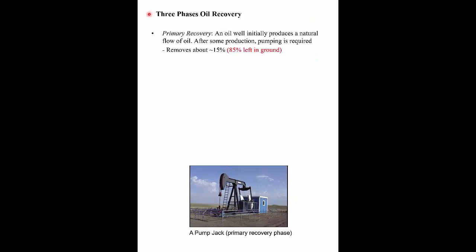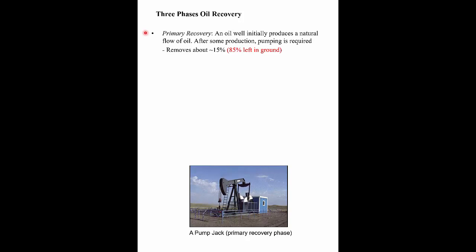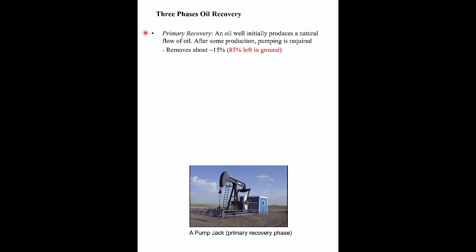We talked about a geological trap for oil in the previous presentation. There are three phases to oil extraction. The first is primary recovery. When you drill the oil well, the oil initially flows under natural pressure — like the old movie gushers, which they don't allow nowadays because of blowout preventers. During primary recovery, oil flows under geological pressure, and then even after it stops, you only need a little pumping to remove it.